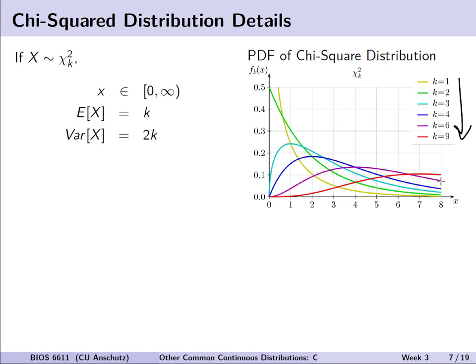If a random variable is chi-squared distributed with k degrees of freedom, the sample space must be from 0 up to infinity — observed values cannot be negative. The chi-squared distribution has a very nice calculation for its expected value and variance: the expected value of a chi-squared distributed random variable x is equal to k, and the variance is equal to 2 times k.